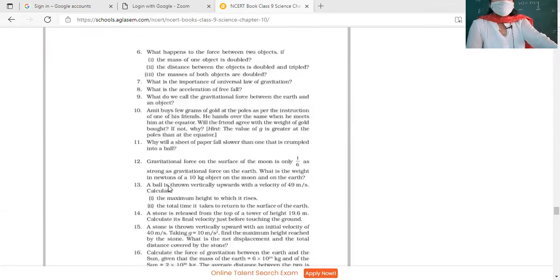Question 11: Why will a sheet of paper fall slower than one that is crumpled into a ball? Because of more surface area, it is experiencing greater force of friction. That's why that open paper falls slower than a crumpled paper.